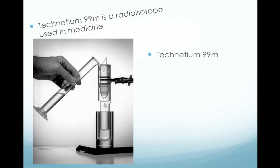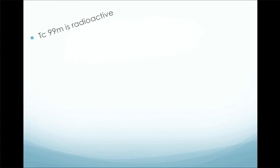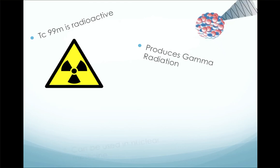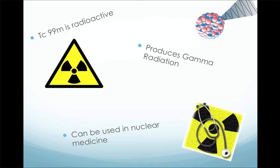Did you know that the 'm' at the end indicates that it is a metastable nuclear isomer? Technetium-99m is radioactive, therefore it produces radiation. The radiation it produces is gamma rays. Gamma rays are the strongest form of radiation and, in this case, are used for diagnostic medical purposes in nuclear medicine.